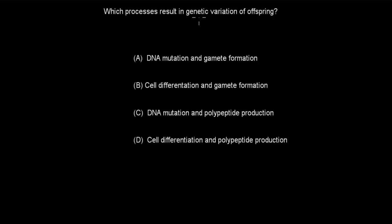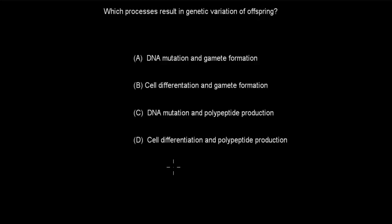Next question. Which process results in genetic variation of offspring? A. DNA mutation and gamete formation. B. Cell differentiation and gamete formation. C. DNA mutation and polypeptide production. D. Cell differentiation and polypeptide production. Pause the video and attempt the question.